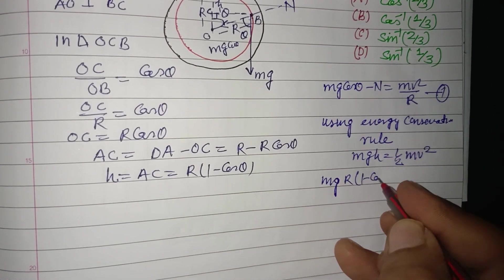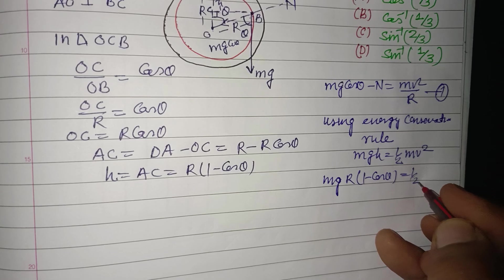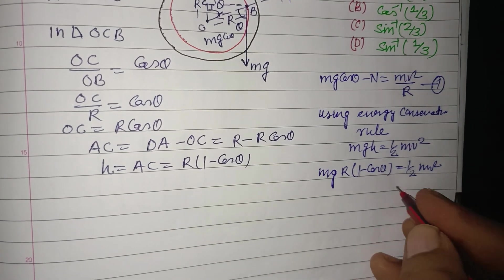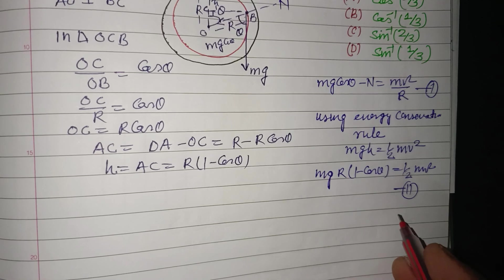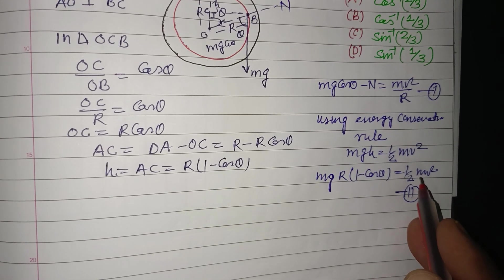This h is mg R (1 minus cos theta) equals half m v squared. This is our second equation. From first and second, we put the value.